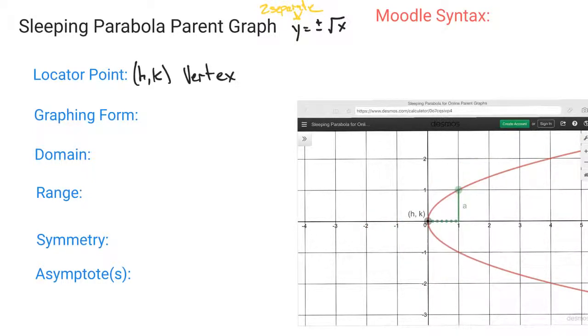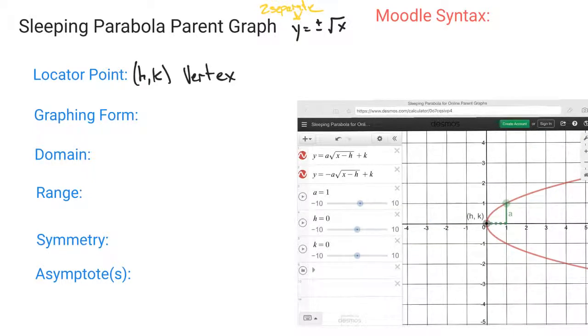You also have your a value, so as we take a look at the a value in the equation, as I stretch that a value up, you can see that as I move one unit to the right of your locator point, you move up three units, and therefore your a is equal to three.